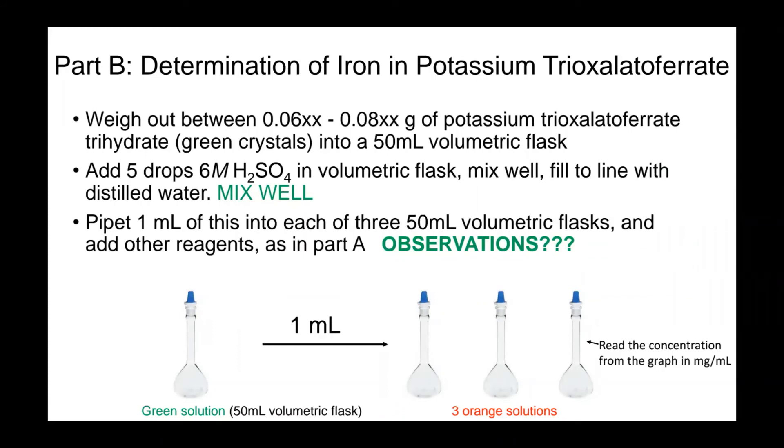In Part B, which is the determination of iron in potassium trioxalato ferrite, you are going to weigh out between 0.06 to 0.08 grams of potassium trioxalato ferrite trihydrate, which is the green crystal you prepared in Experiment 6. You are going to measure it into a 15 ml volumetric flask. Then you add five drops of concentrated sulfuric acid to the volumetric flask. Mix it well. Fill it to the line with distilled water.